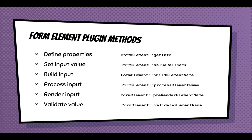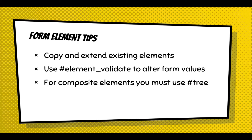Form element plugins have key methods: define properties and get info about the element; set the input value via a value callback; build the input — how it's displayed; process it before it's rendered; render that input; and finally validate it when someone hits submit. Some form element tips: always copy and extend existing elements — it's the best way to get started. Element validate is a callback and is the only way to alter a form value when it's being submitted. For composite elements you must use the `#tree` property, which collects all values into an associative array.